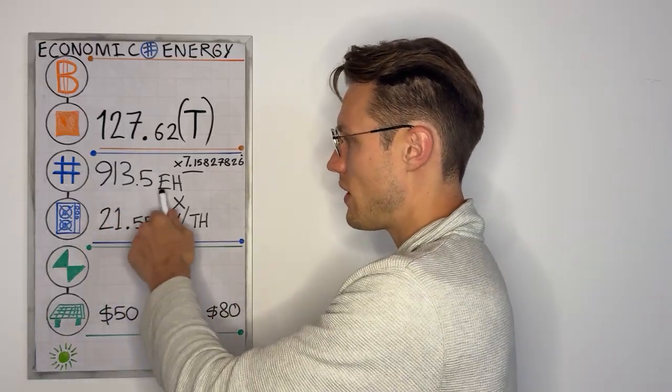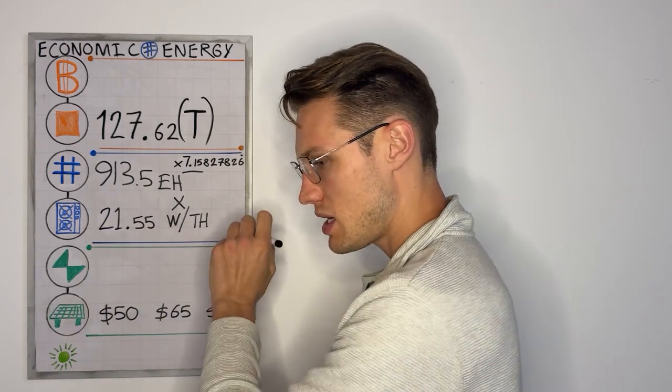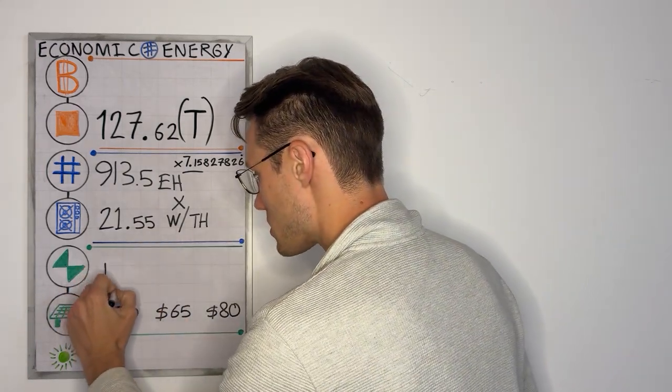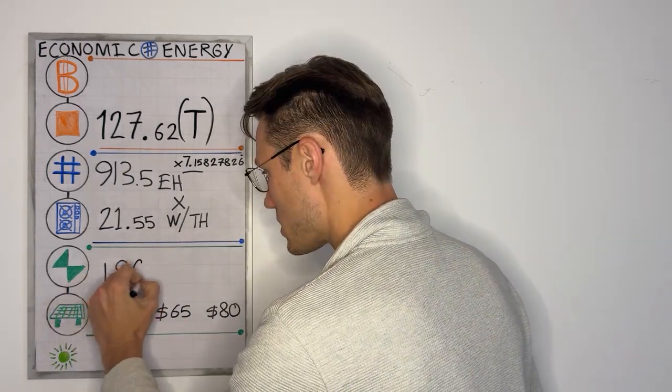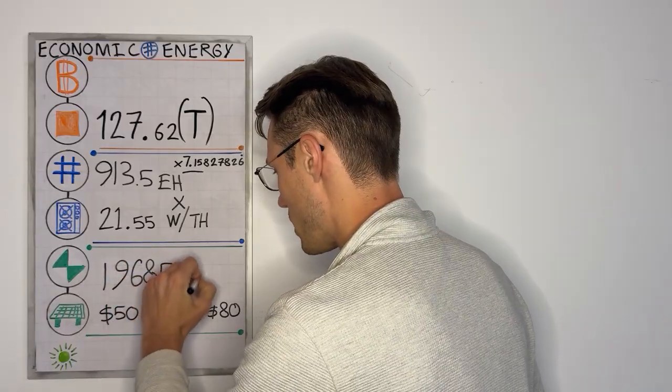913.5 times by 21.55 is, on the numbers, 19,685 megawatts.